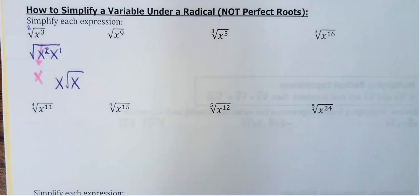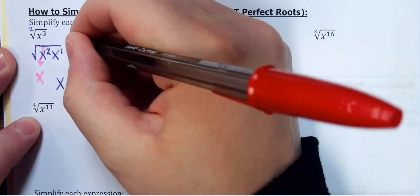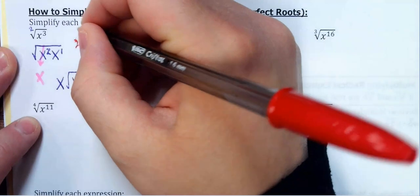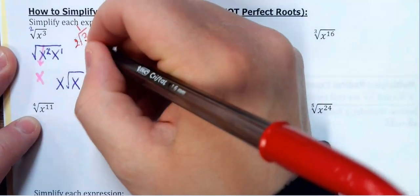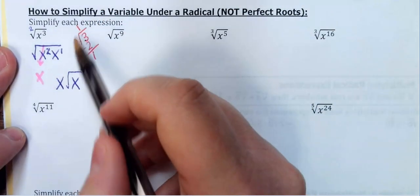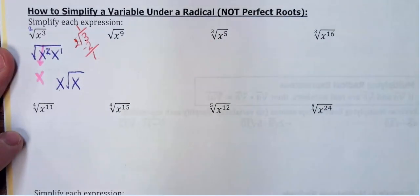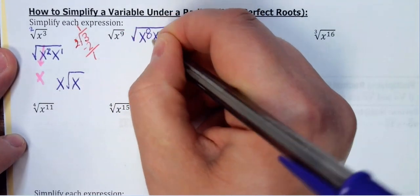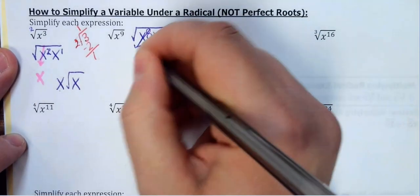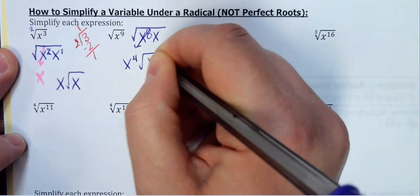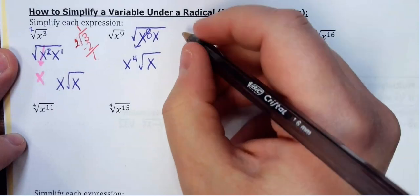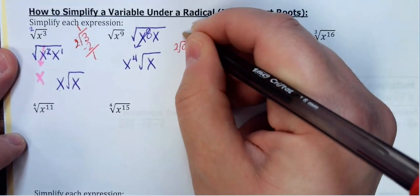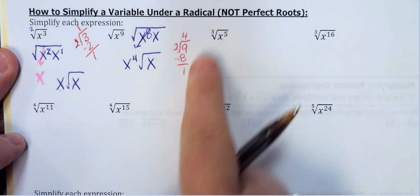Another way to do this is to divide the exponent by the root index. How many times does 2 go into 3? Two goes into 3 once — remainder 1 — so I can take one x out and one x stays underneath. For x⁹ under a square root, I rewrite it as x⁸·x. Divide 8 by 2: x⁴ comes out. Two goes into 9 four times, remainder 1, so four x's come out and one stays underneath.